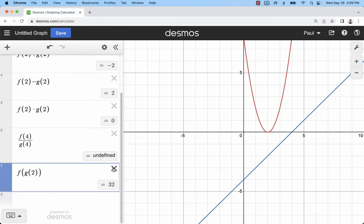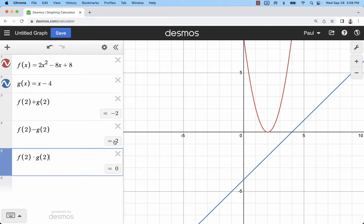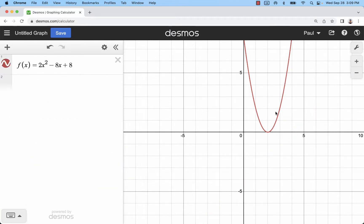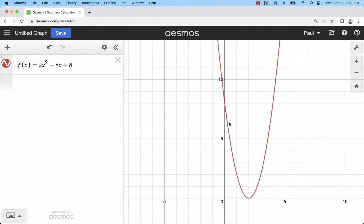Lastly, let's look at the concept of difference quotients. So I'm going to delete all of these back to this function. Now let's say I want to find the average rate of change from this point, (0, 8), to this point, (3, 2).